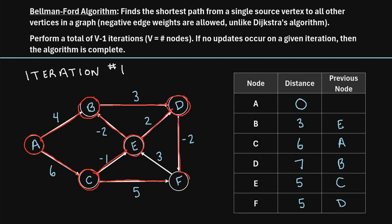Lastly, moving on to node F. Node F has only one edge going away from it — from F to node E, that's a distance of three. F currently has a distance of five, so five plus three is eight. Eight is not shorter than node E's current distance of five, so we don't update that value. That completes our first iteration of the Bellman-Ford algorithm.